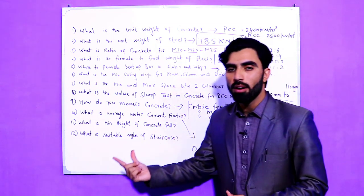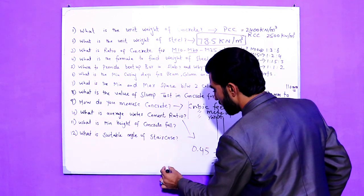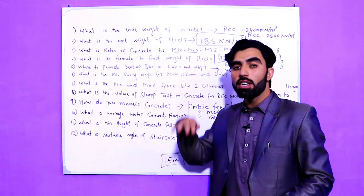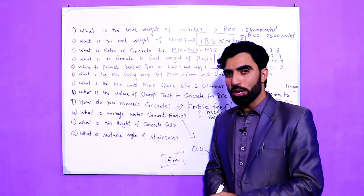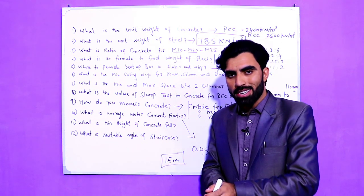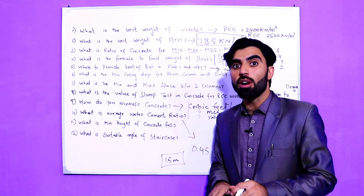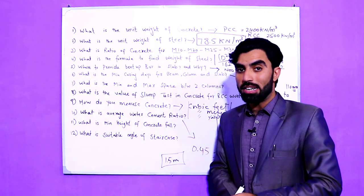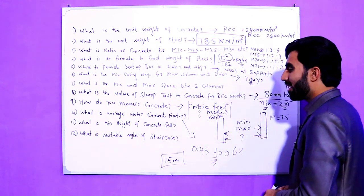The eleventh question is: what is the minimum height of concrete fall? The answer is 1.5 meters. If you increase the height of the concrete fall beyond 1.5 meters, it will cause segregation — which is the separation of particles in concrete (cement, sand, aggregate, and water). Segregation weakens the RCC structure.